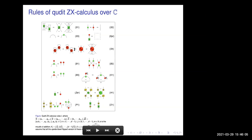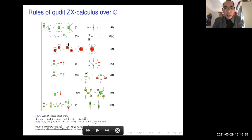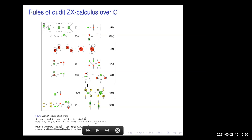Another question asked whether the current rules represent just the stabilizer qubit ZX calculus — complete only for stabilizers. Harun clarified: no, this is just the first table of rules. He has another table, and he's doing a generalization. He needs to maybe add some more rules for completeness and will talk about it later.